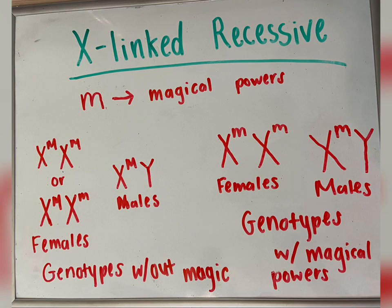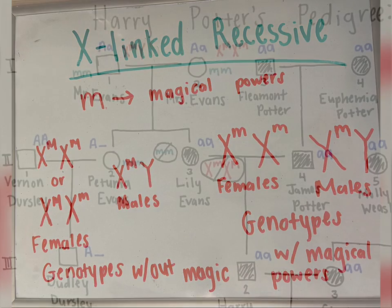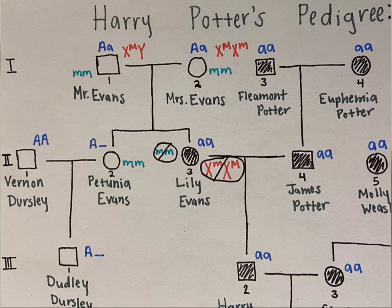Next, X-linked recessive traits are genes found on the X chromosome and are hidden when crossed. Looking at individual 1-1 and individual 1-2, neither have the trait, so their genotypes would be as pictured on the paper. Individual 2-3 does have the trait and should have the genotype X-little m, X-little m. Since she gets one X chromosome from mom and one from dad, she couldn't have that genotype. This shows X-linked recessive is not a consistent mode of inheritance.